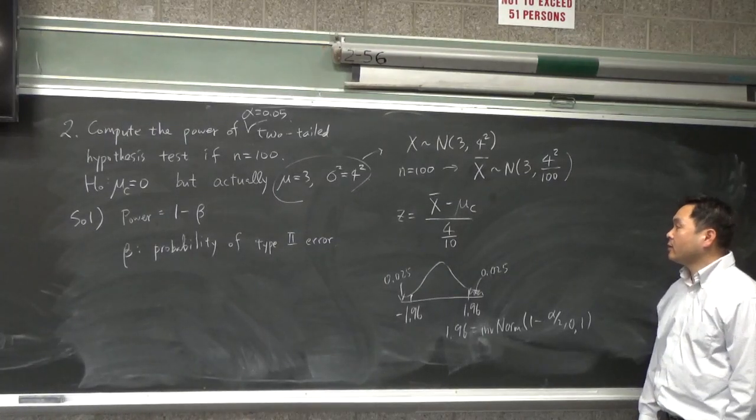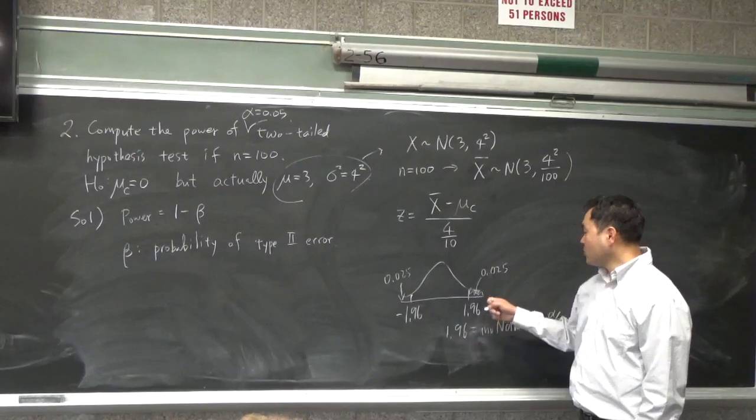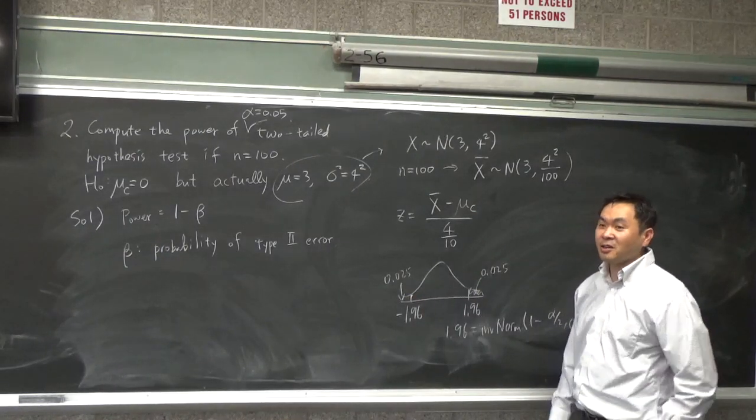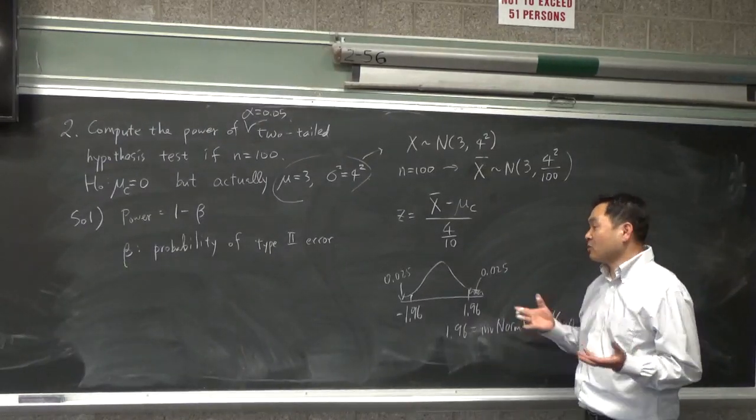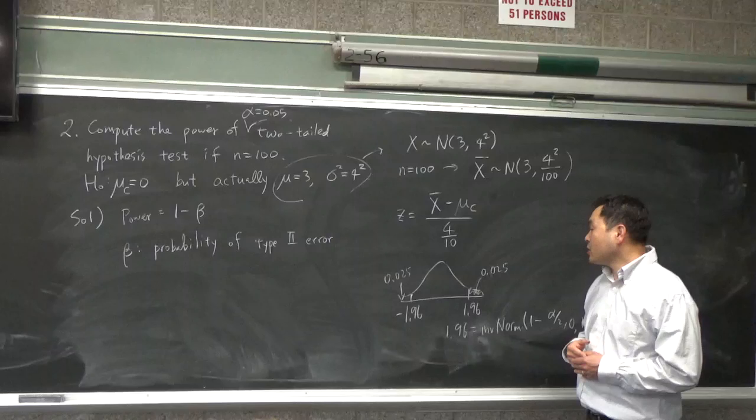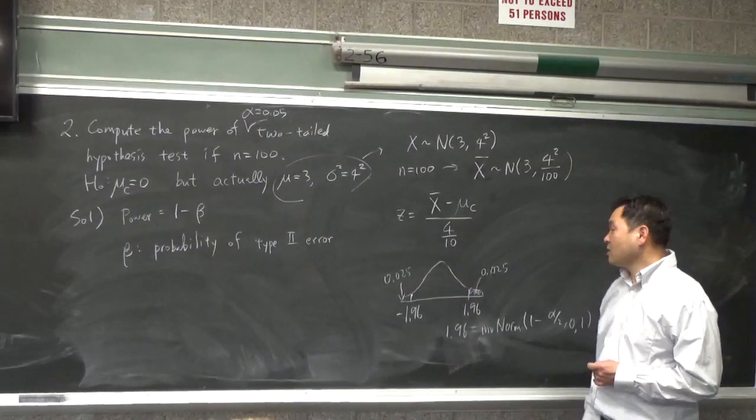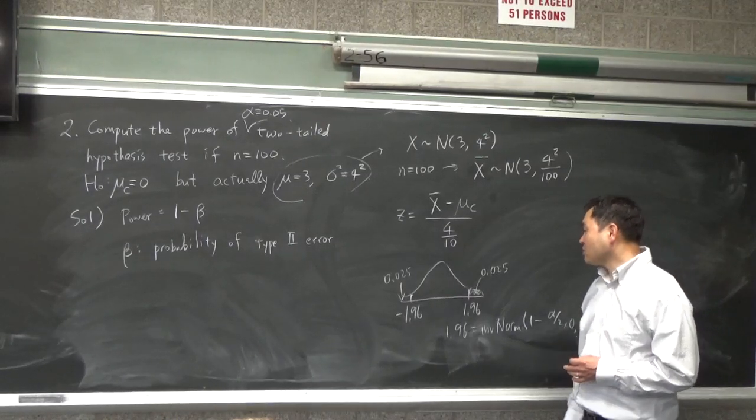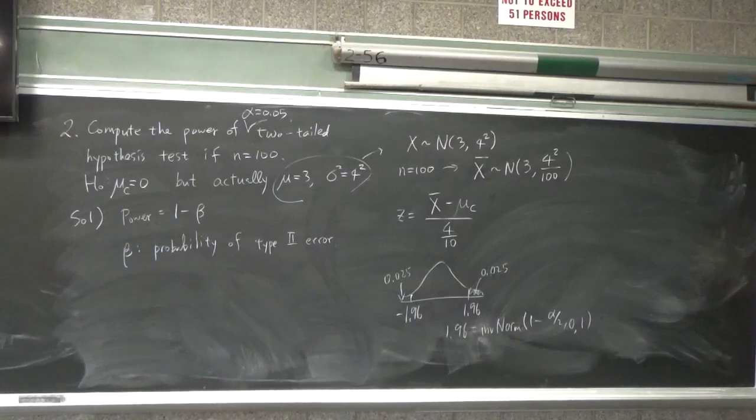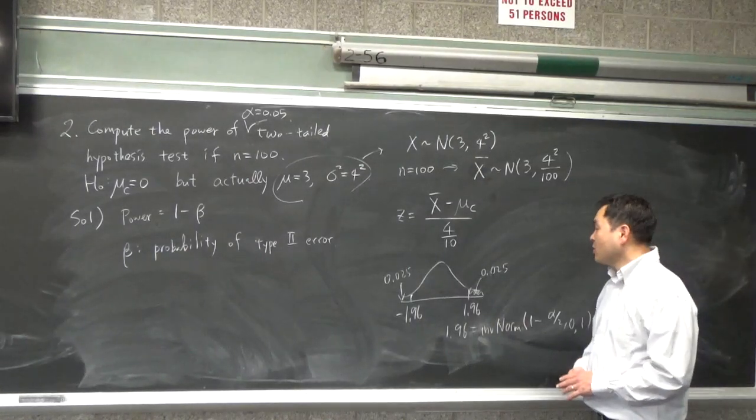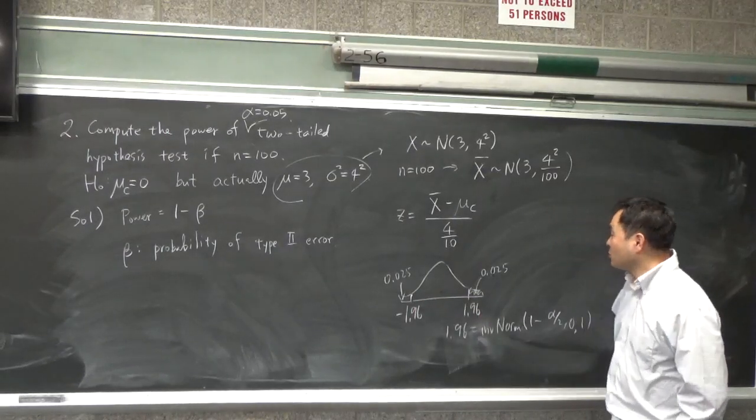And if this value falls in here or there, we reject, and we're happy. Then the hypothesis testing gave us a correct conclusion, right? But if the value becomes in here, then we're not happy because that means the hypothesis testing fails to reject the null. So let's think about exactly what values x bar is going to follow.